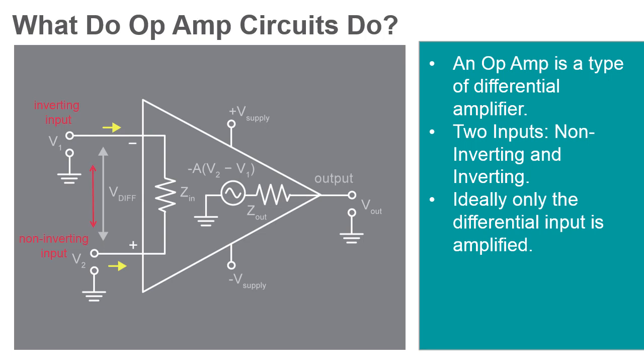The output voltage of the op amp is represented by the following equation. Vout is equal to Aol times the difference between the inverting and non-inverting inputs, where Aol is the open loop gain of the amplifier.